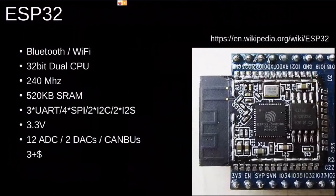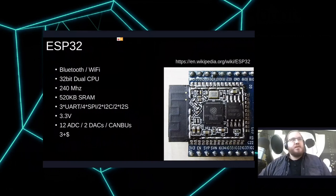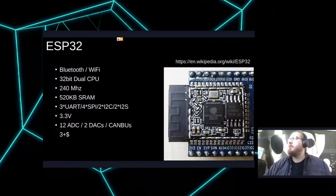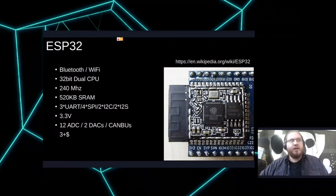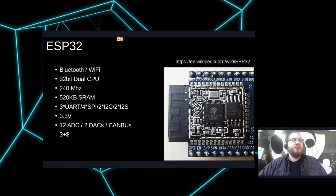The ESP32 is pretty much standard these days. It's a small chip about thumbnail size — just the chip itself, not the whole board. It's a 32-bit CPU with two cores; the ESP8266 was single core, and this is dual core — actually triple core, because there's also a low-power CPU that enables ultra-low-power mode. It runs at 240 MHz with 520 kilobytes of RAM, which is very usable compared to an Arduino.